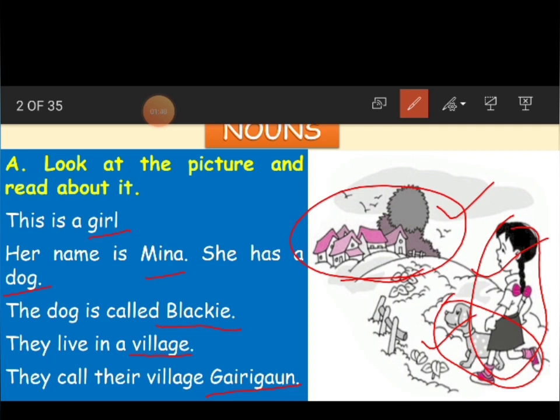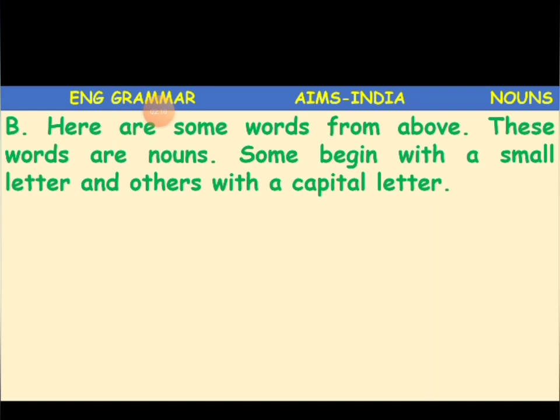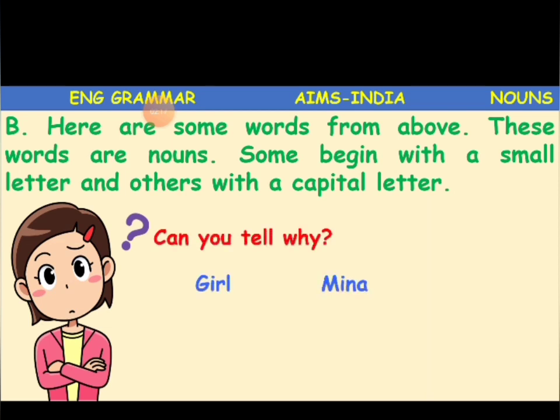All these — the names of places, things, persons, and animals — are called nouns. Girl, Meena, dog, Blackie, village, Garigao — all these are called nouns. They are all called as nouns. Now here, if you see, some words are given. These words are nouns. Some begin with a small letter and others with a capital letter.